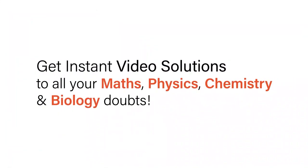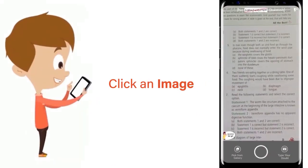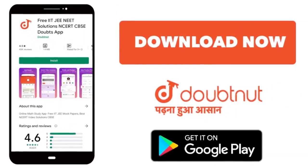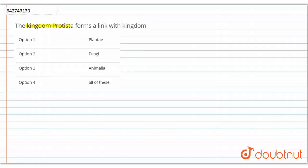With Doubtnut, get instant video solutions to all your maths, physics, chemistry, and biology doubts. Just click the image of the question, crop the question, and get instant video solution. Hello students, our question is: The kingdom Protista forms a link with kingdom, and the options are Plantae, Fungi, Animalia, and all of these.